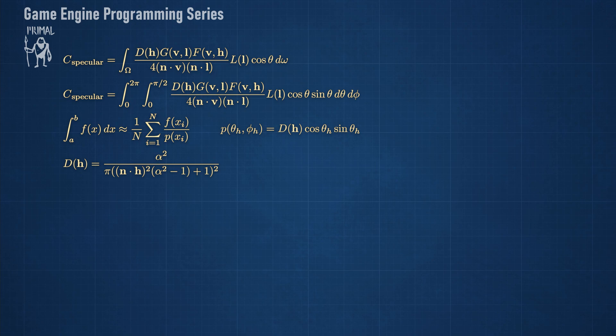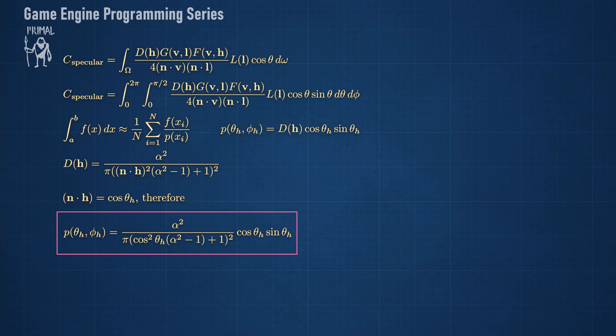Here theta_h is the angle between the halfway vector and the normal direction. Therefore we can use cosine of theta_h instead of n dot h. Substituting this in the PDF we get this equation which again depends only on theta.